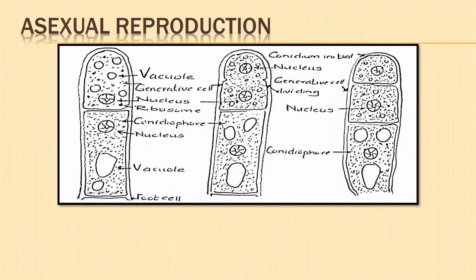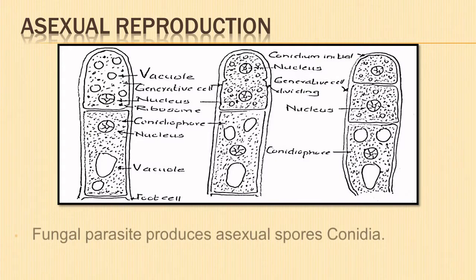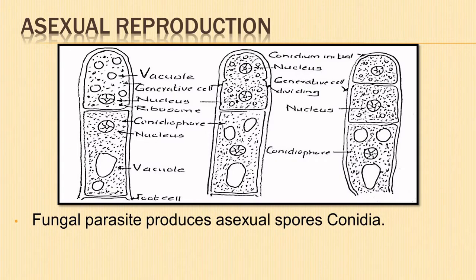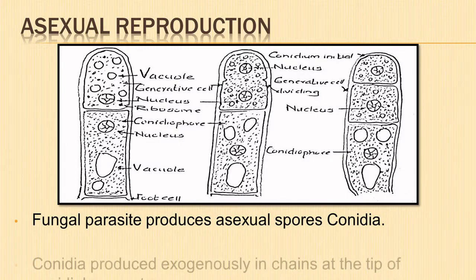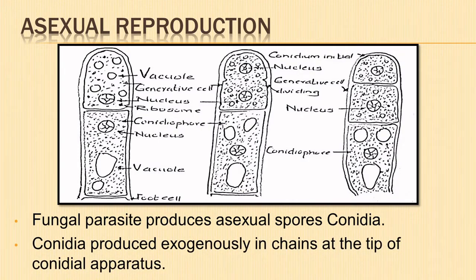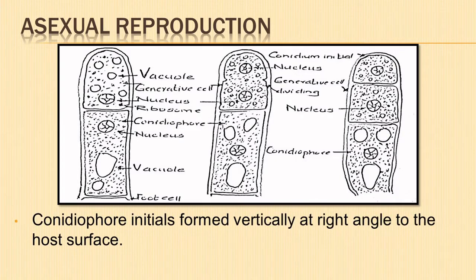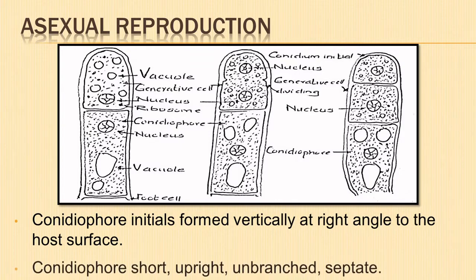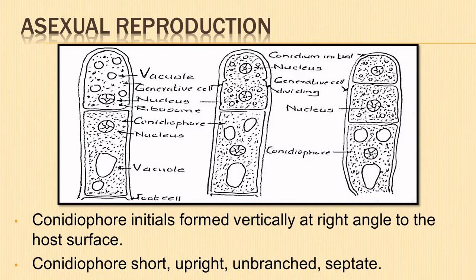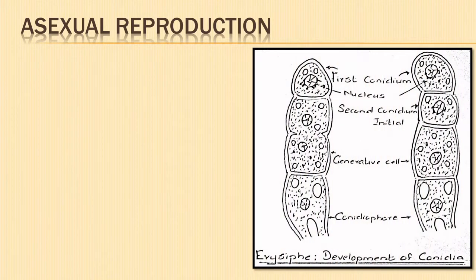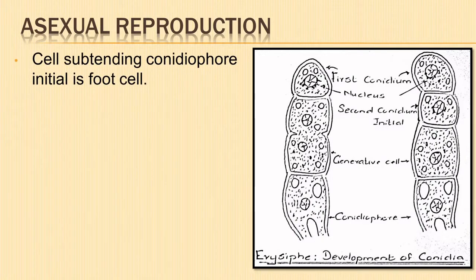Let us understand asexual reproduction in genus Erysiphe. Asexual reproduction in Erysiphe starts during the growing season. The fungal parasite produces asexual spores called conidia. They are produced in abundance exogenously in chains at the tip of the conidial apparatus. Several short hyphal branches grow vertically at right angles to the host surface — these are the conidiophore initials. Each conidiophore is short, upright, unbranched and septate. The cell subtending the conidiophore initial is the foot cell.